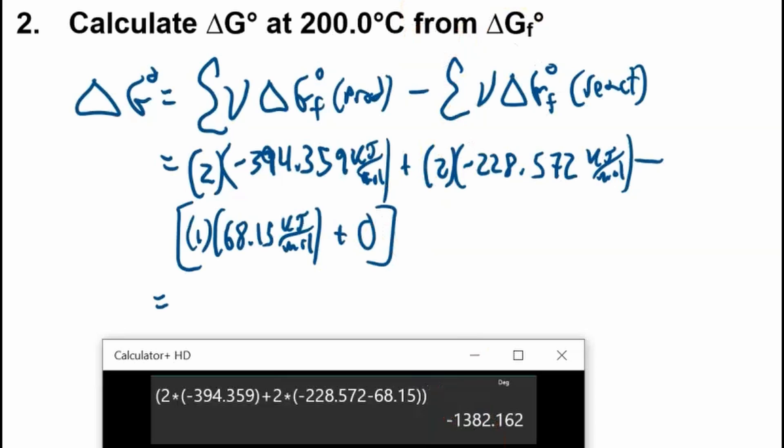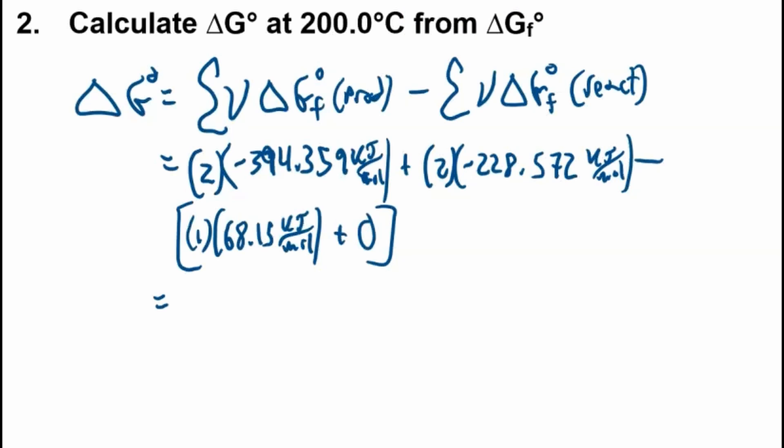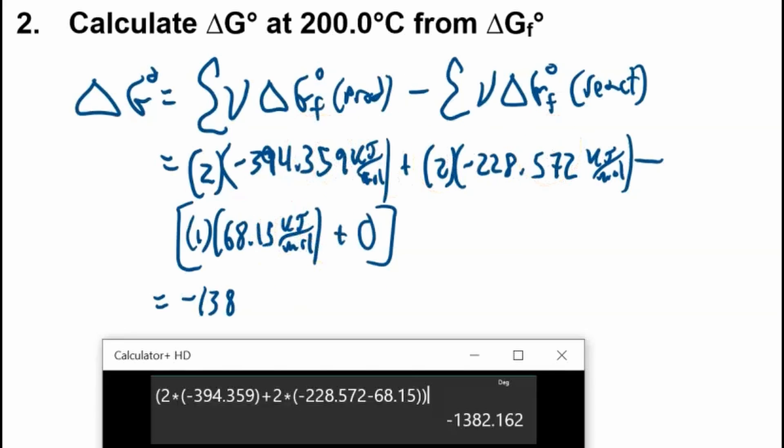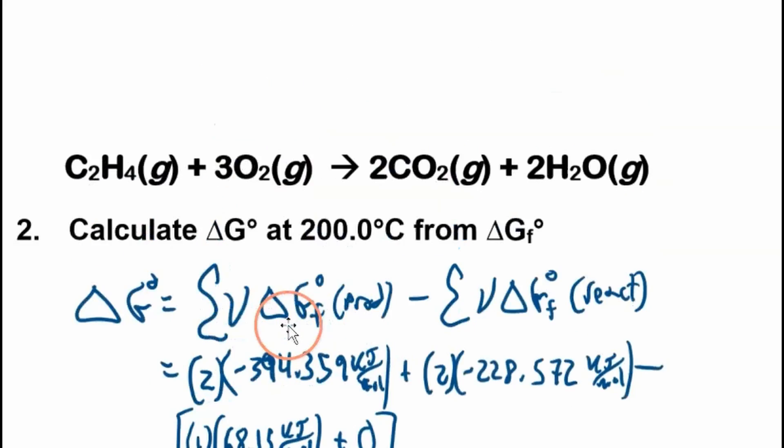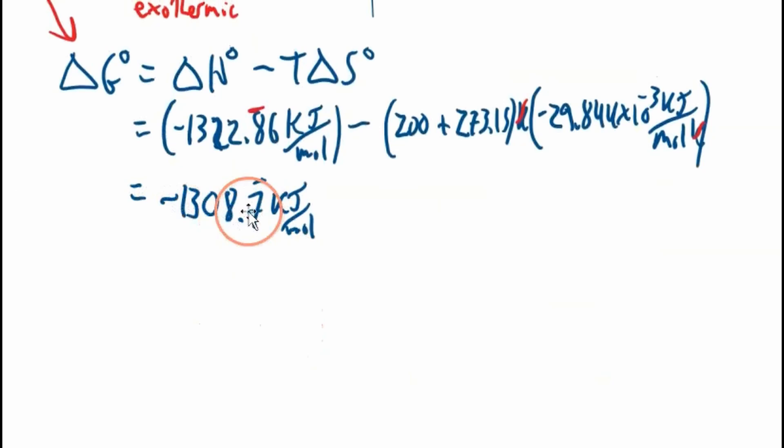Negative 1382.2. Actually we have two decimal places of precision here. Negative 1382.16 kilojoules per mole. It's negative, it's spontaneous in the forward direction, and it coincides with the data from this one. Very close, so that's awesome, life is good.